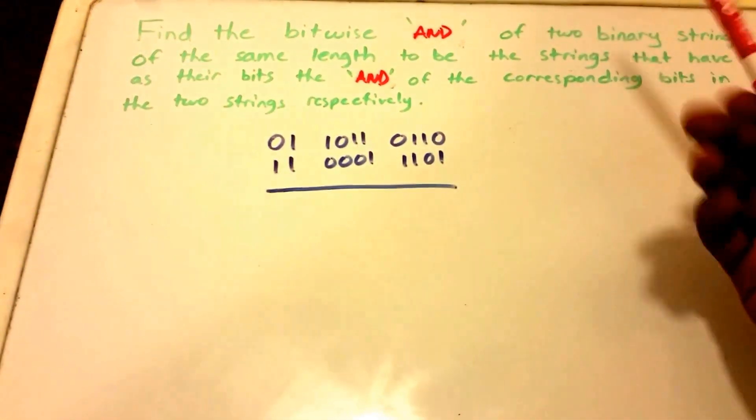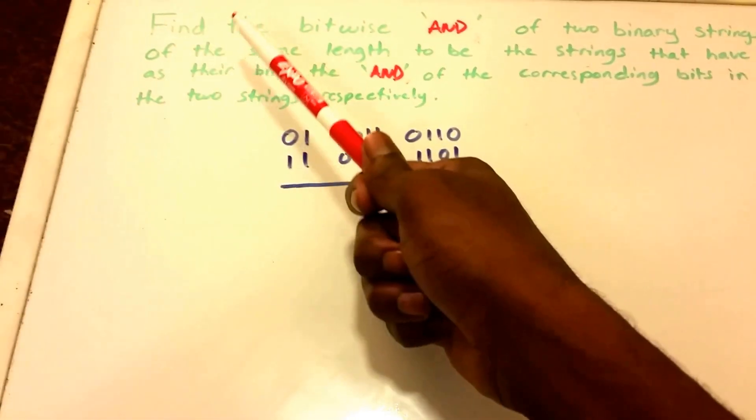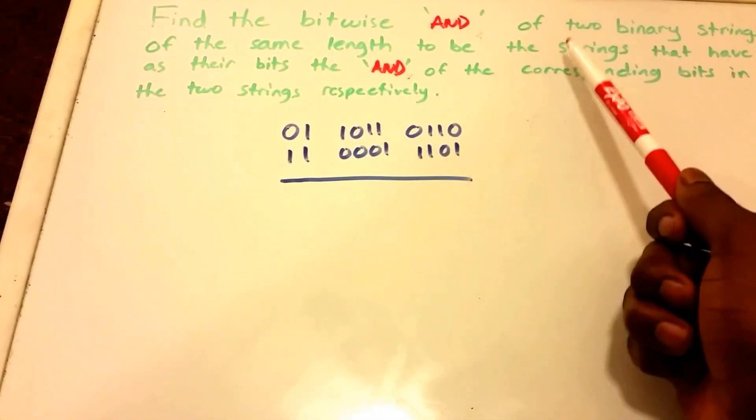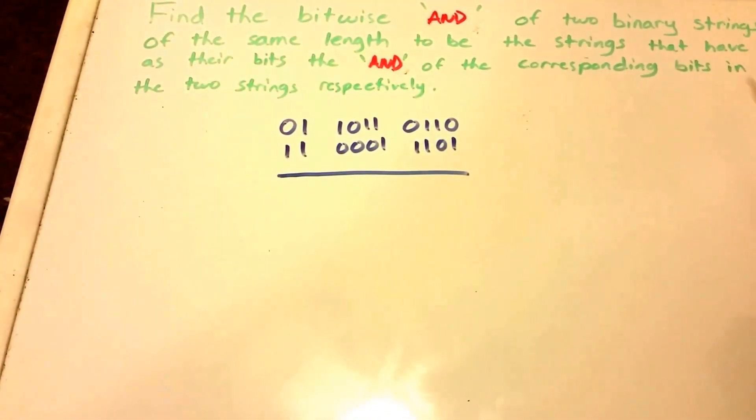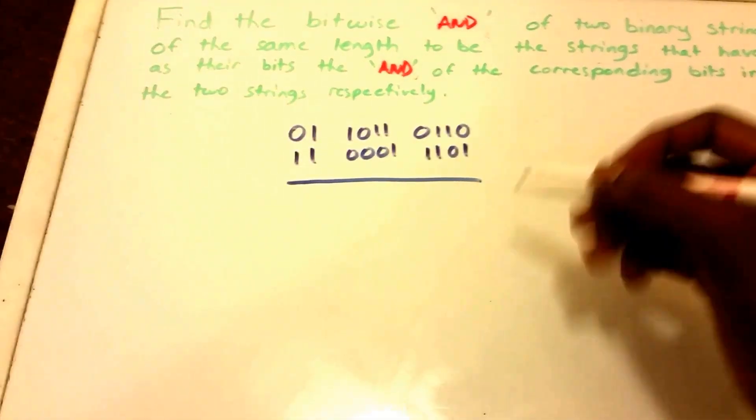Hey guys, in this video we're going to do the bitwise AND operation. Here we have the question: find the bitwise AND of two binary strings of the same length to be the strings that have as their bits the AND of the corresponding bits in the two strings respectively.